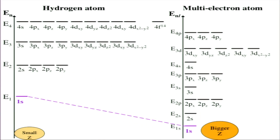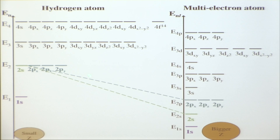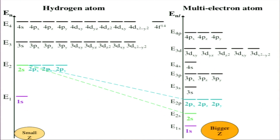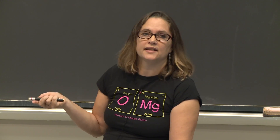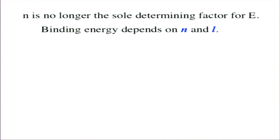So 1s is lower, 2s is lower in energy. And now, importantly, 2s and 2p are no longer degenerate with respect to each other in energy. So the 2p system is higher in energy than 2s. Compared to hydrogen, in a multi-electron atom, n is not the sole determinant of the energy levels. Now instead of just n, we have n and l.